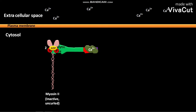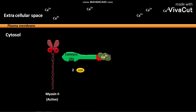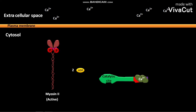The addition of phosphates to the myosin light chains is called phosphorylation. After the phosphorylation, 2-ADPs are liberated to the cytosol. Due to this phosphorylation, an active and uncurled myosin-2 is formed. The actin binding sites of active uncurled myosin-2 then bind to actin and undergo the cross-bridge cycle.